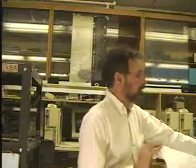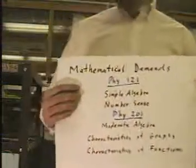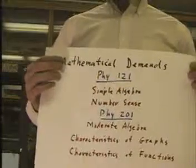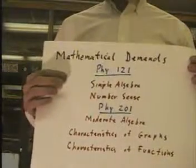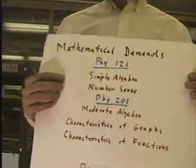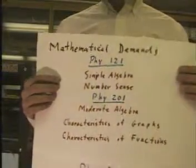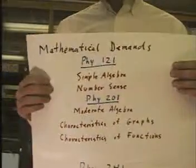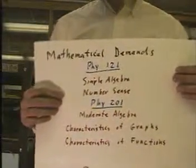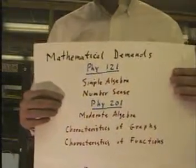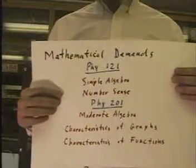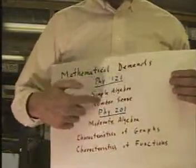Physics 201, Physics 121, and Physics 241. Let me talk about the mathematical demands of each course. Mathematical demands in Physics 201 are not too high. You should know how to do some simple algebra, and you should have some simple geometry under your belt — basic concepts like the area of a circle and the area of a rectangle, some properties of circles, and you should have a pretty good number sense.